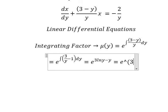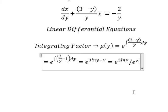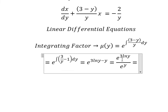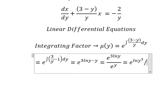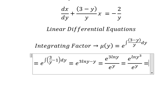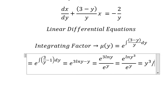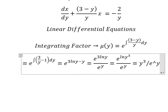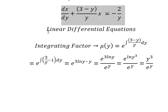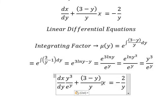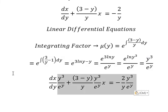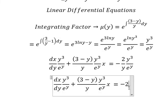The integration of one is y. Now we can simplify: we put the three inside the ln of y. So we have y to the power of three over e to the power of y. That means we multiply both sides by this integrating factor.